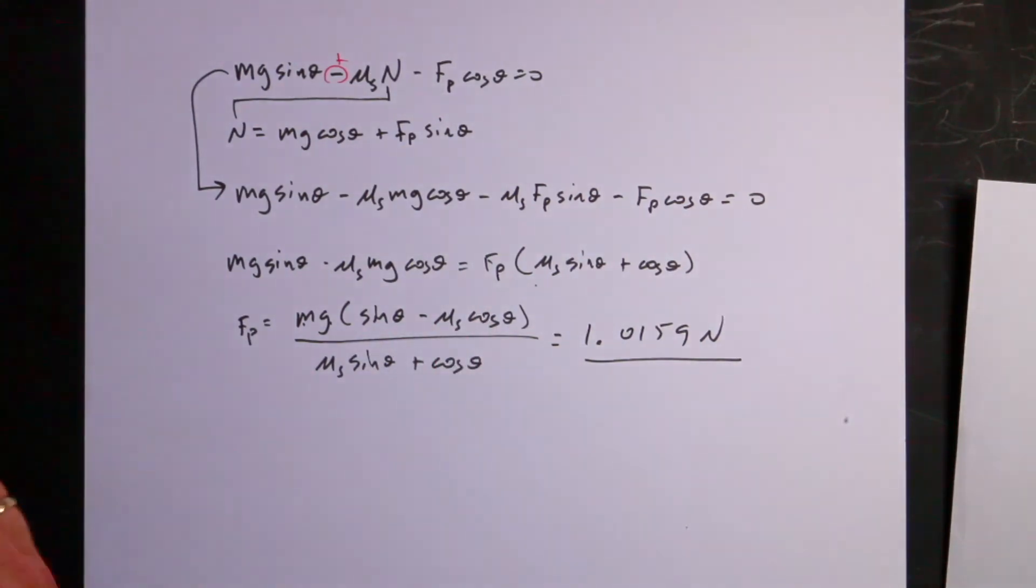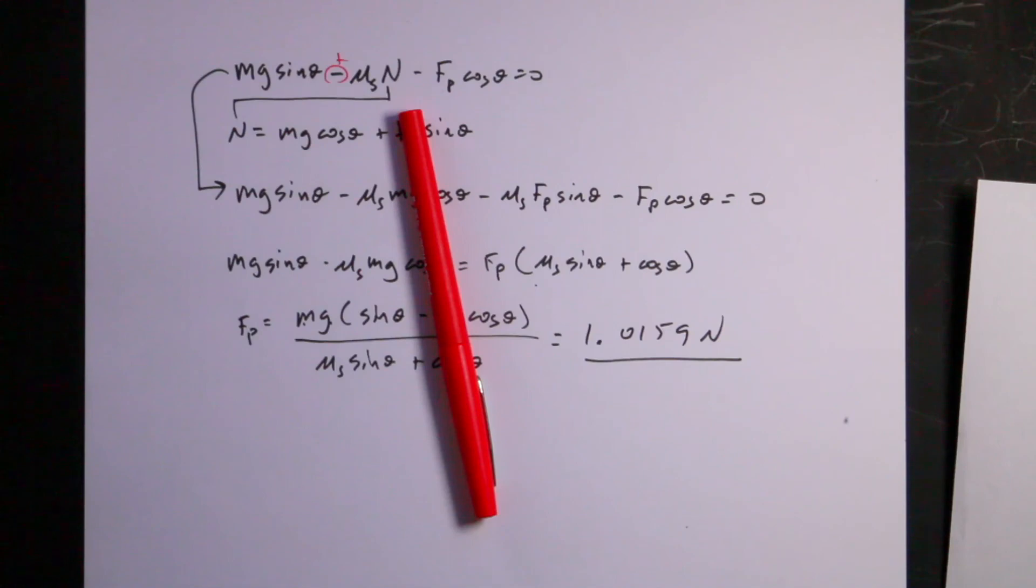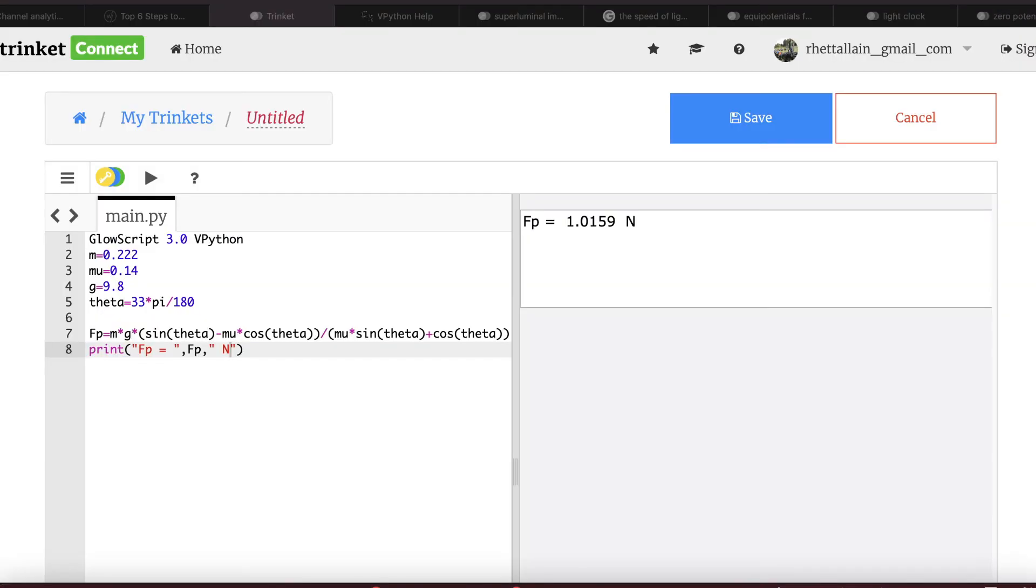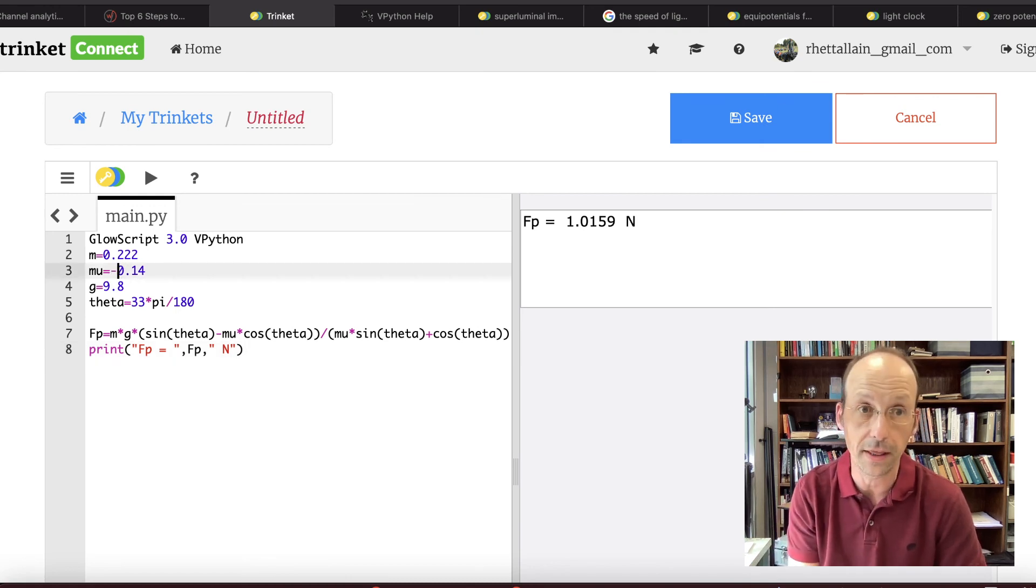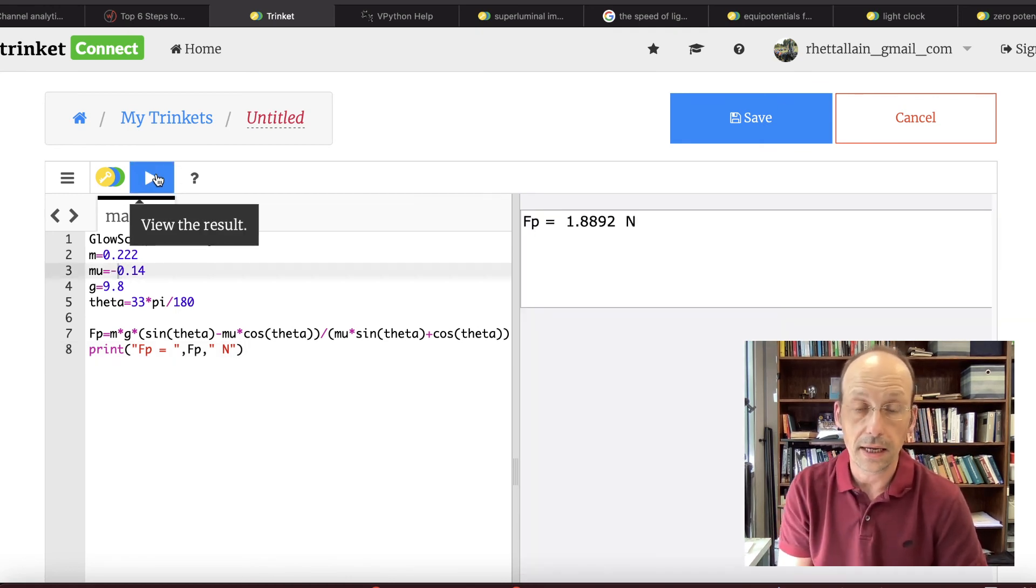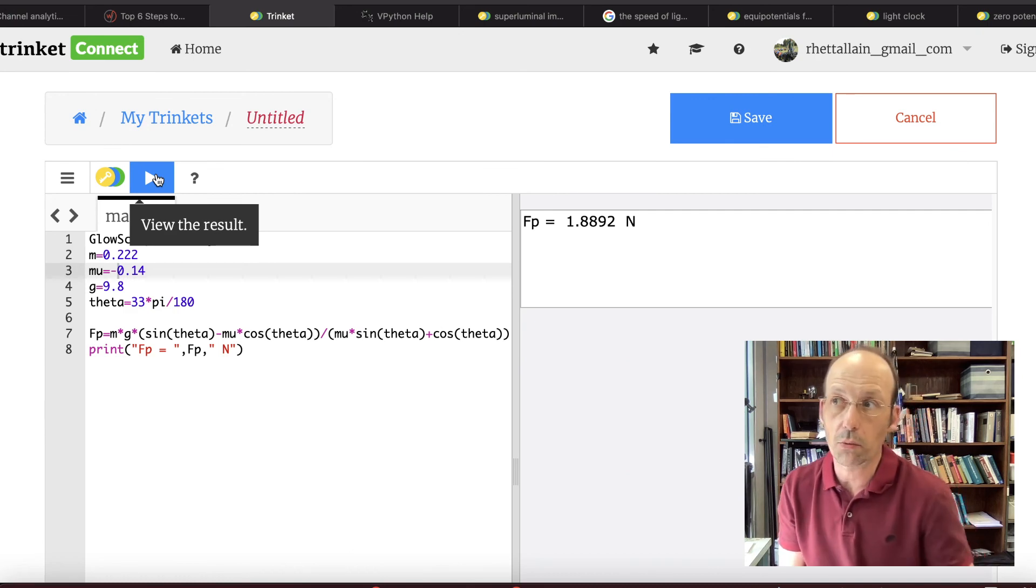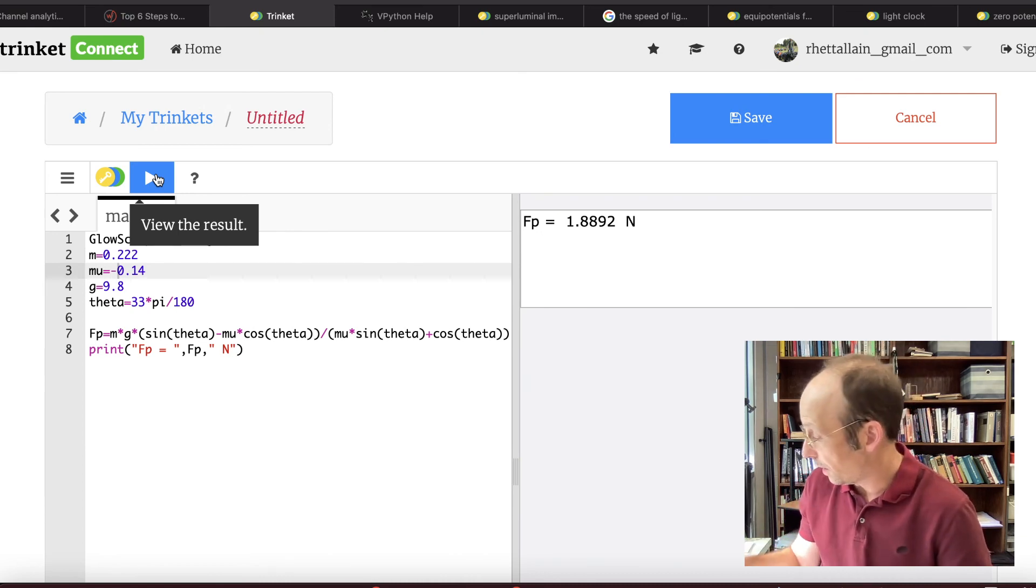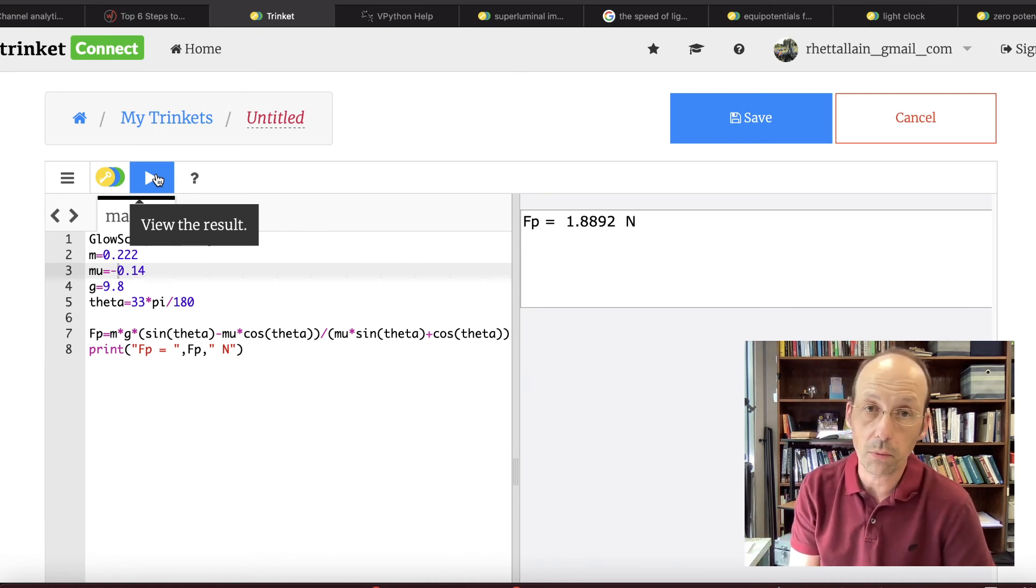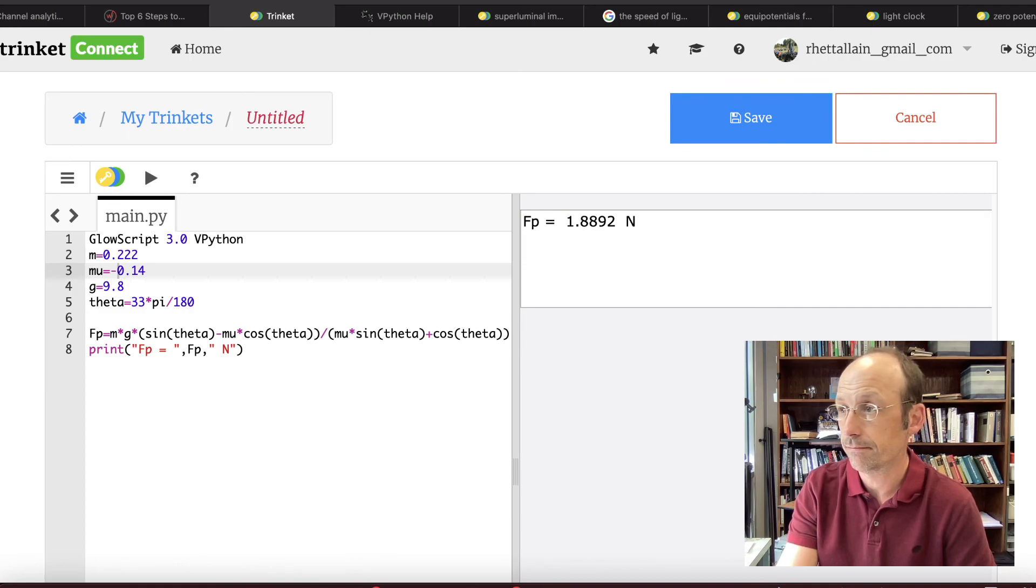So if I just go over to my same calculation back to Python, I'll turn on the camera so you can see me. Then I can just recalculate this by putting a minus sign in front of that and recalculating. And I get 1.8892. So it is harder to push it up than it is to prevent it from sliding, because in one case you're working with friction and in the other case you're working against friction. But there you go, that's the answer to that problem. It's a little bit more complicated than I wanted, but if you really understand forces it's not so bad.